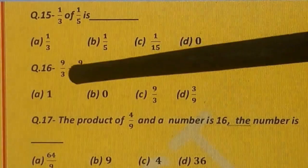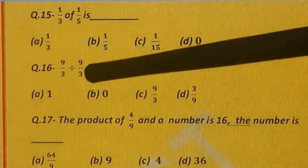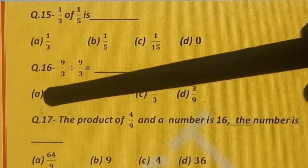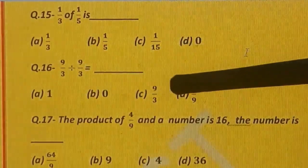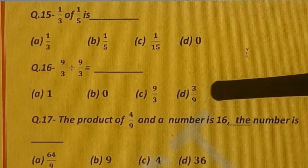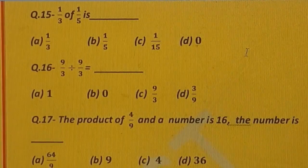Question number 16. 9 upon 3 divided by 9 upon 3 is equal to dash. Options are: A) 1, B) 0, C) 9 upon 3, and D) 3 upon 9.